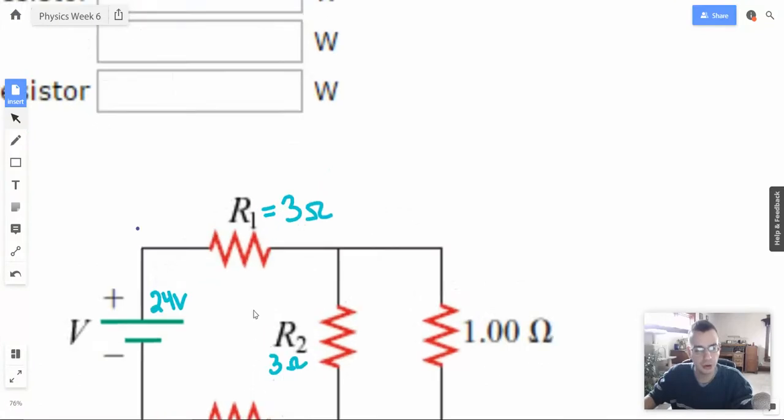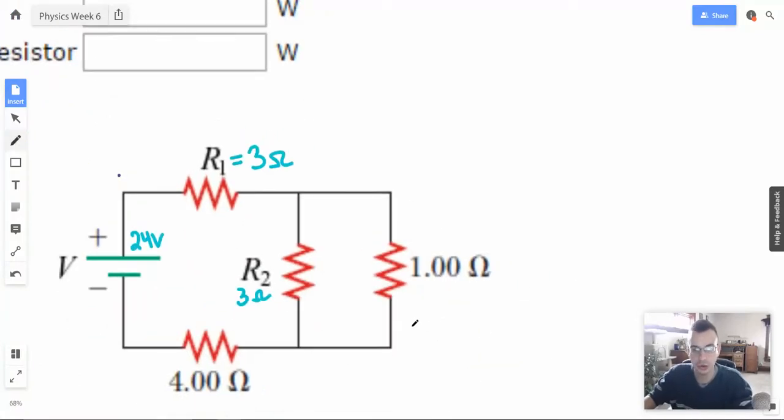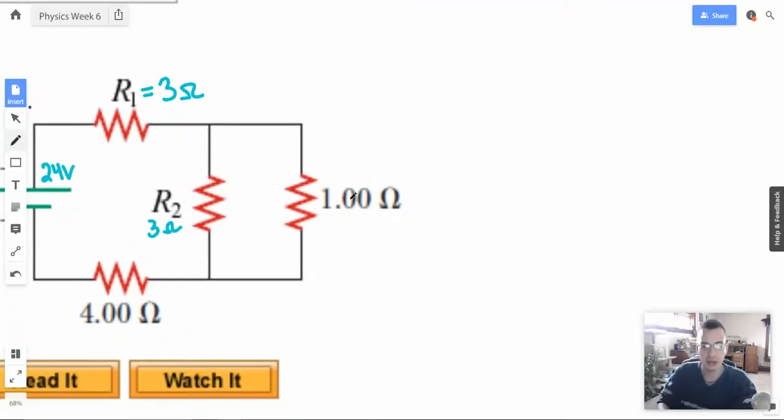So this guy then would be 24 volts. I think I'll move to a little bit darker color, a little bit more assertive. There we go. So now I want to convert, I'm going to redraw this to find the total current that's being given out by the battery. And once we know that, then we can pretty much solve everything. So I'm going to do this, go like this, and I'm going to draw a quick little battery. There we go.